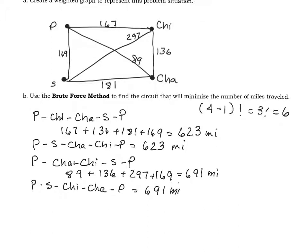What if I go from Peoria, Champaign, and then St. Louis, Chicago, Peoria, what would that be? Well, that's going to be 89 plus 181 plus 297 plus 167, and that's going to be 734 miles.